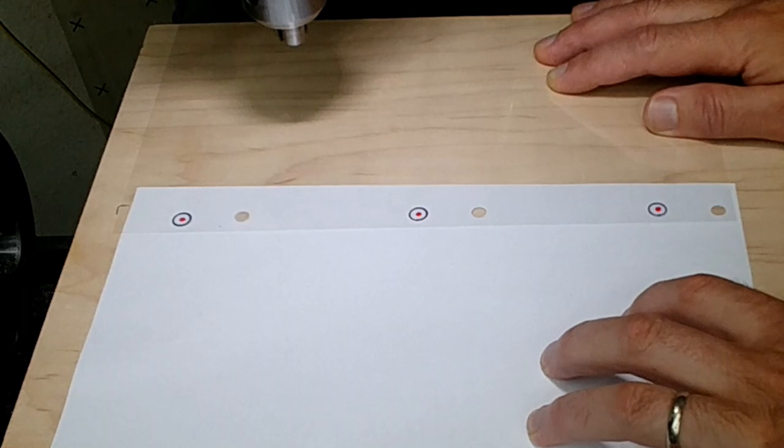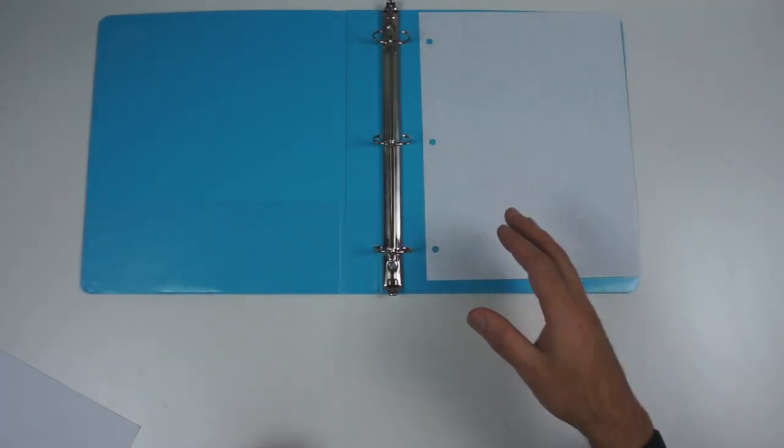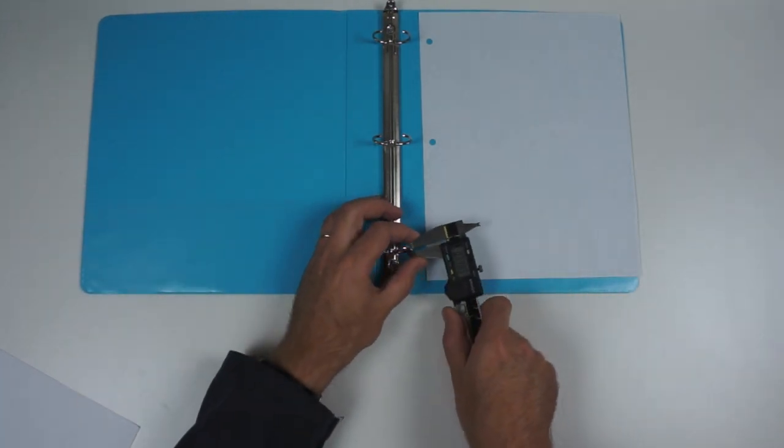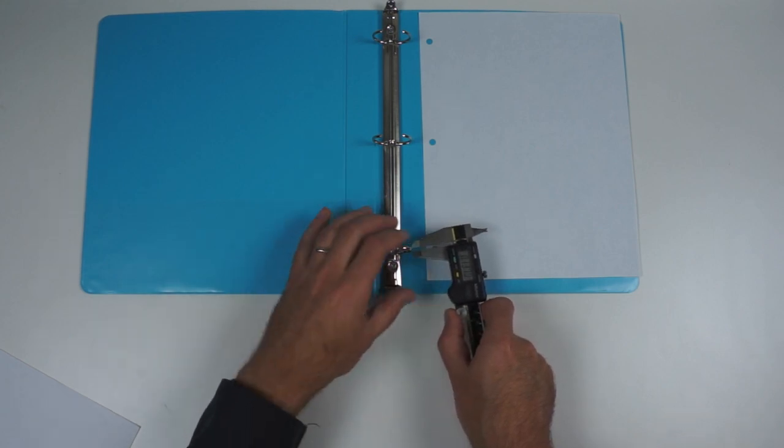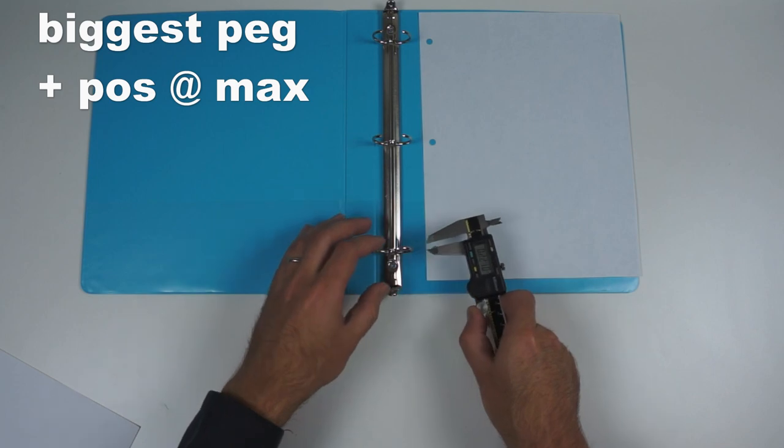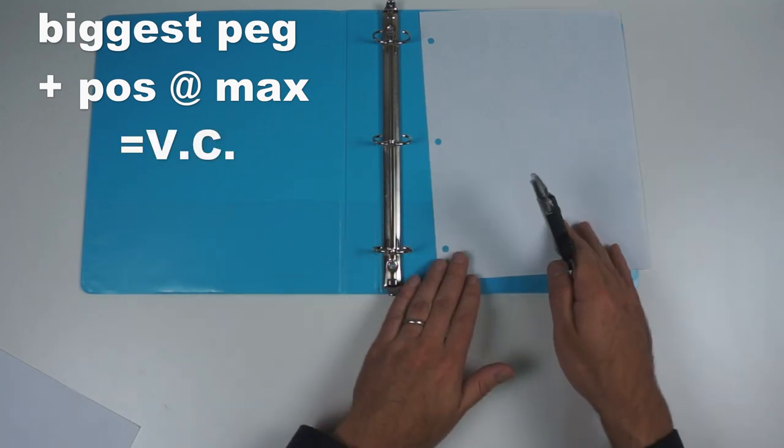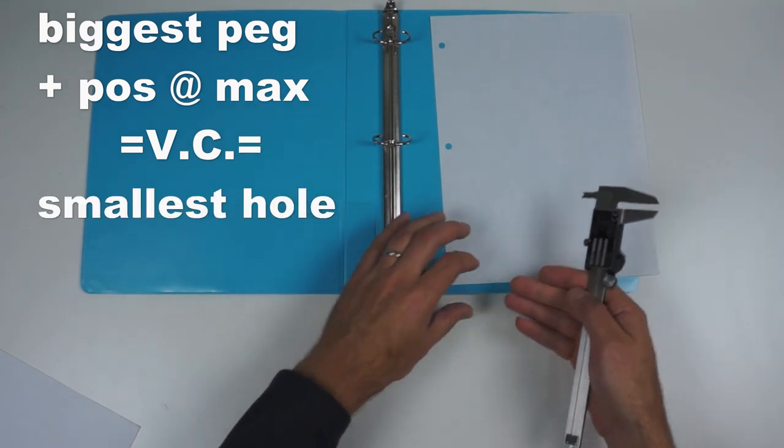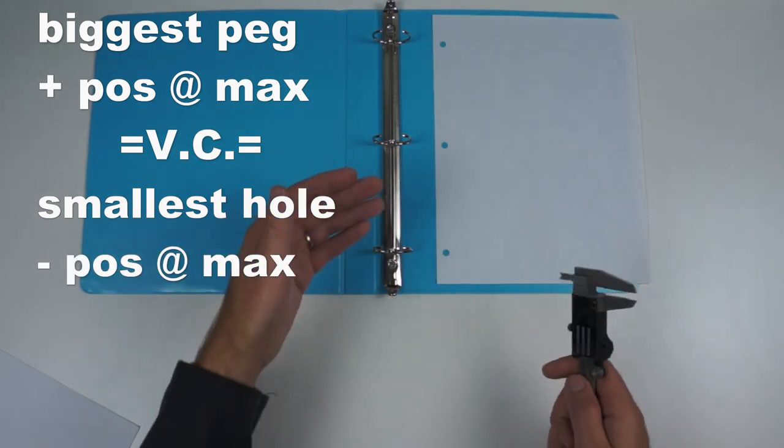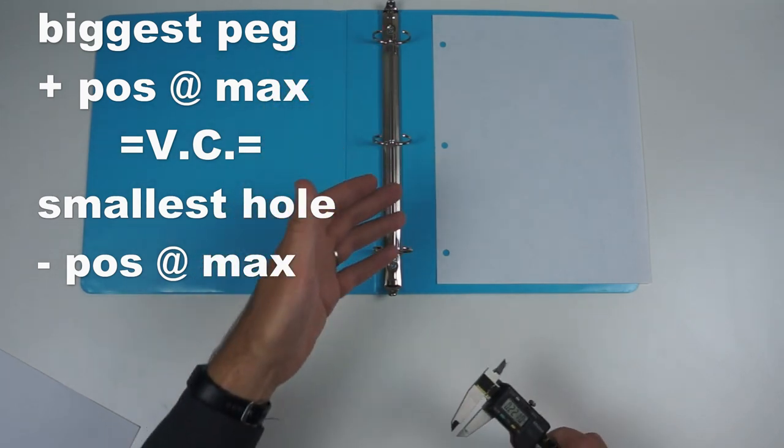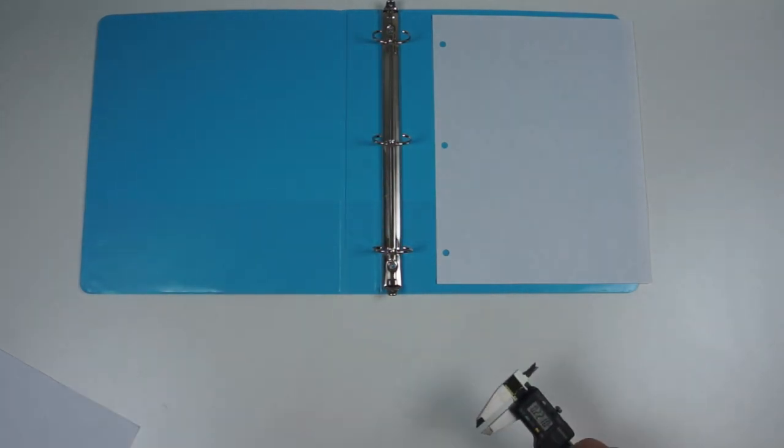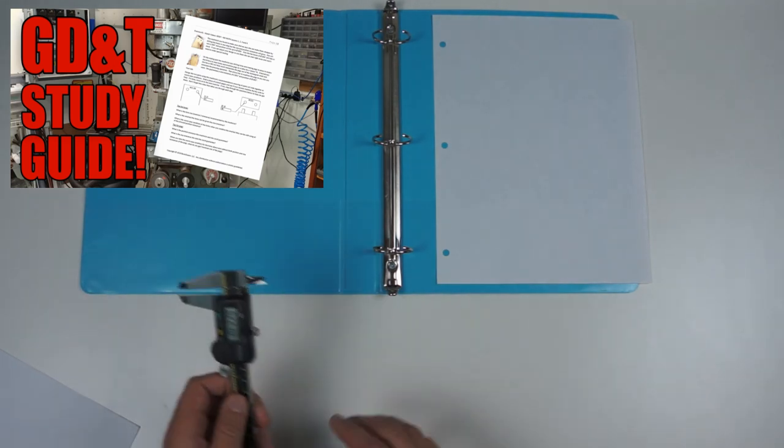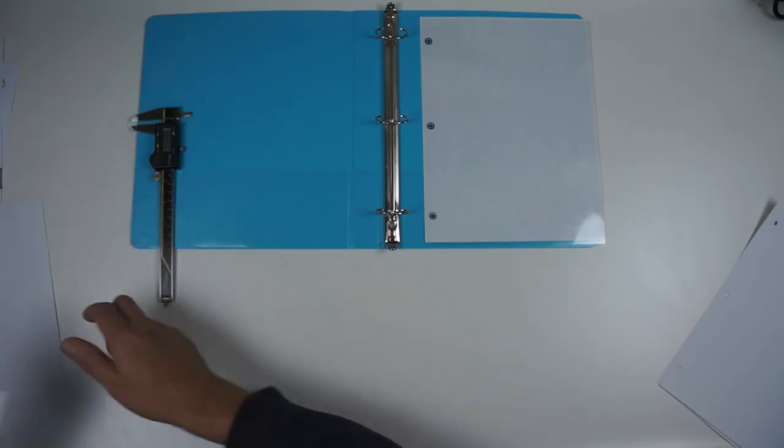Clearly, this is a job for GD&T. We've got pegs, we've got holes. All we have to do, just like we did in lesson one, two, three, is figure out what the worst-case peg is for size—so the biggest peg and the most out of position—that gives us the virtual condition that we then need to stay outside of with our holes. So then worst case of the holes—smallest hole, most out of position—needs to always clear the worst case of the peg. This is a classic pegs and holes problem that we totally know how to do. If you want to get into the nitty-gritty calculations on pegs and holes, go to the study guide. It covers all that nitty-gritty stuff.